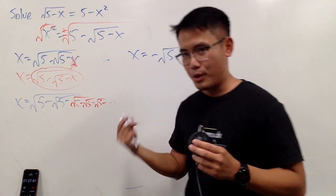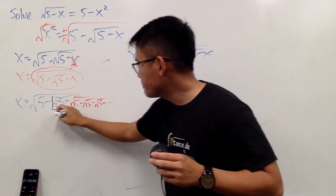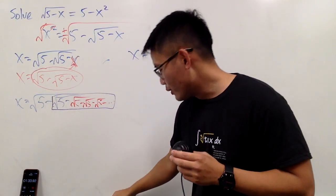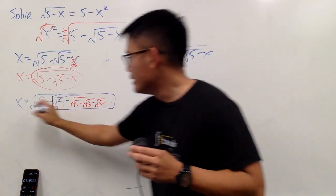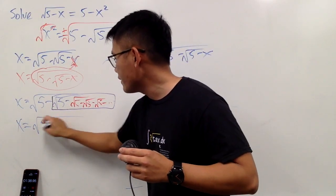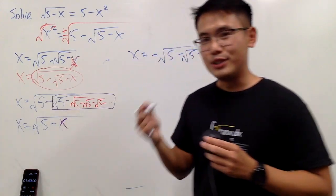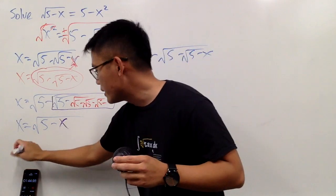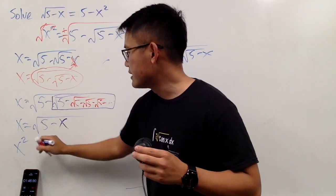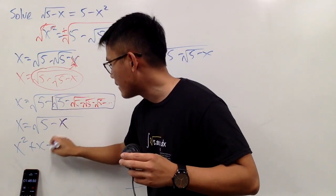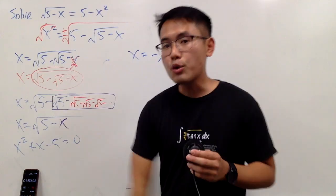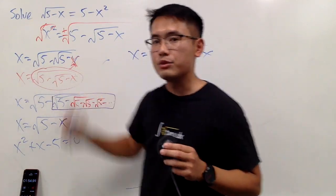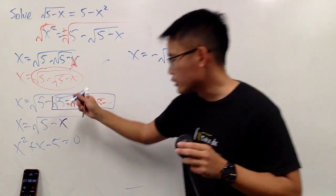Using the purple pen: that infinite nested part is just this x in purple. So we can write this as x equals the square root of 5 minus this purple x. This is really cool! Now we can square both sides. We get x squared, and moving terms to the other side, we get x squared plus x minus 5 equals 0. This is a quadratic equation. It has two solutions, but we only care about the positive version, because x is positive here.